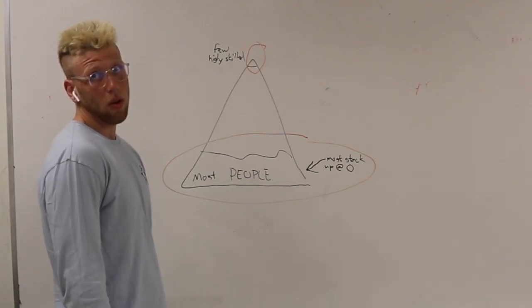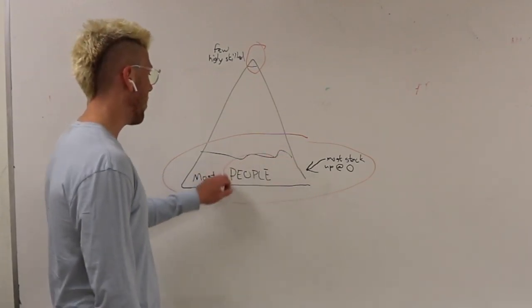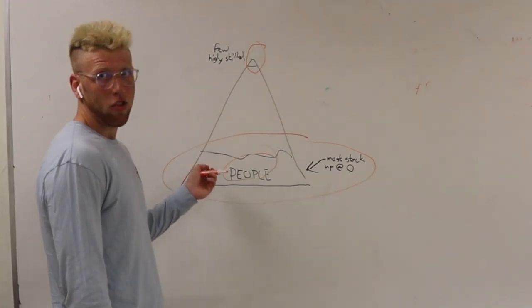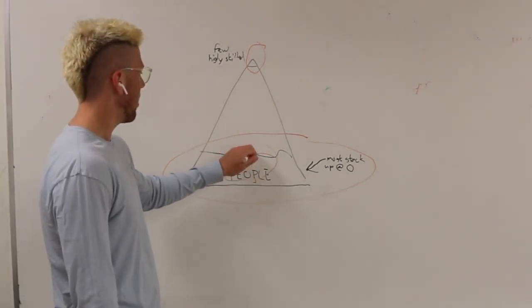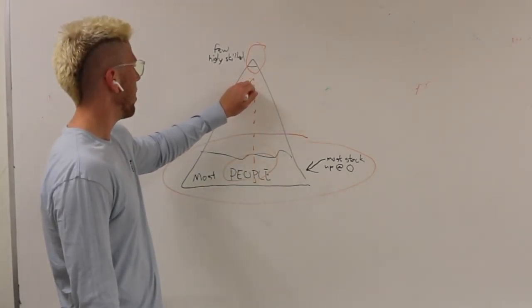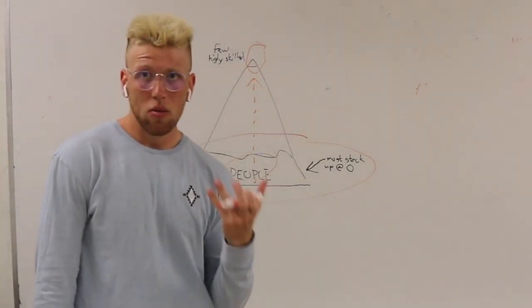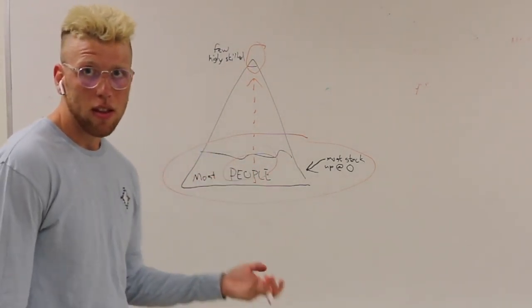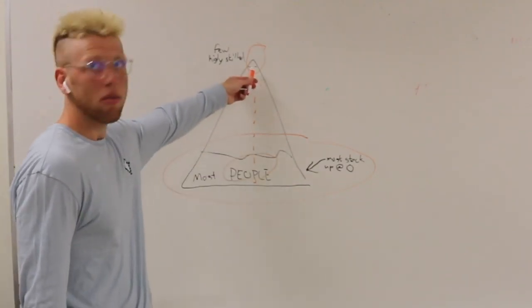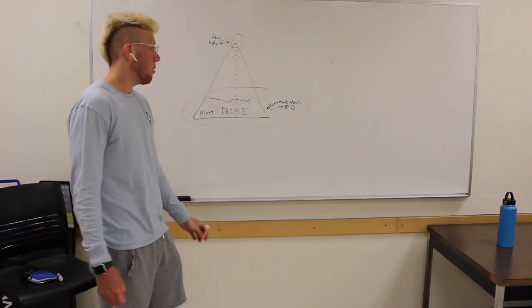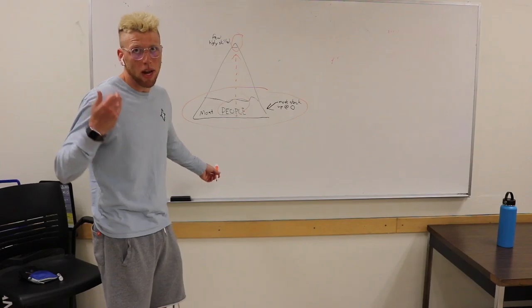So what You Shit to Know 101 focuses on is how to avoid being down here, and what strategies you should implement if you want the greatest possibility of making it up here. Now, just because you implement these strategies does not necessarily mean you'll be able to advance up the hierarchy. Like, I will never be a professional basketball player.